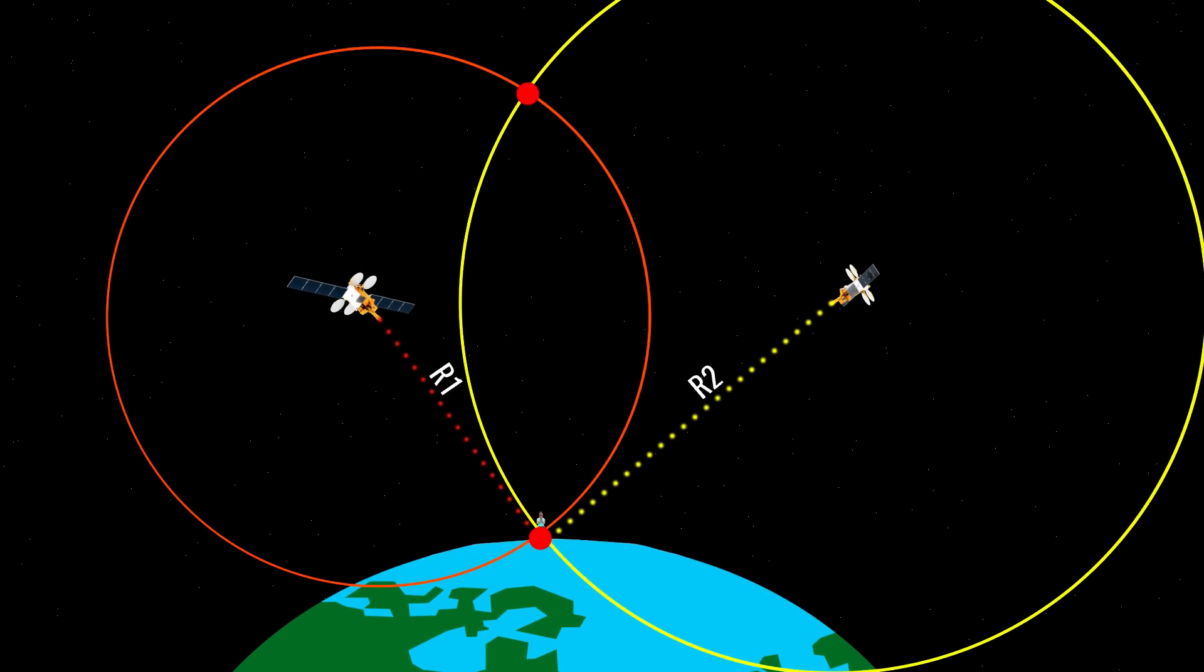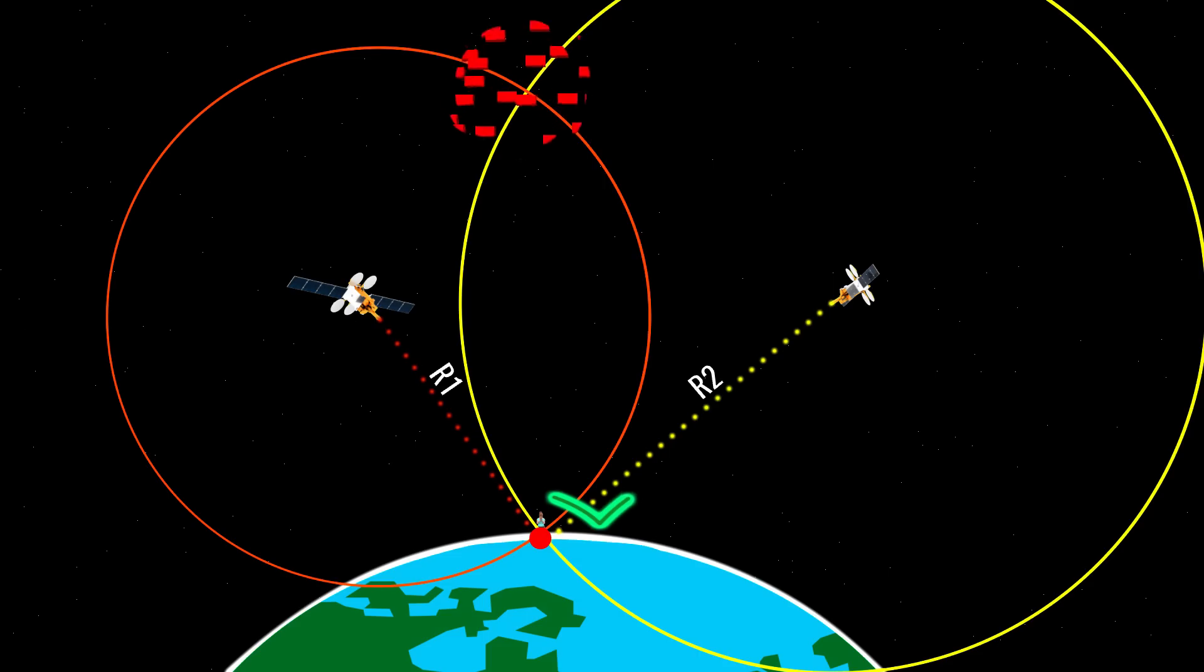Now there is a small issue. There are two intersection points. So, which is your final position? For this, you take the Earth's surface as the third circle and eliminate the improbable solution.